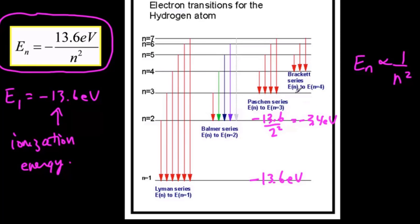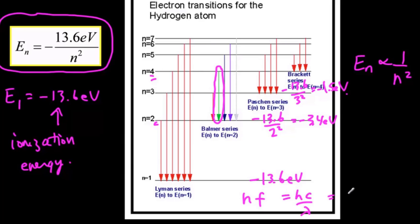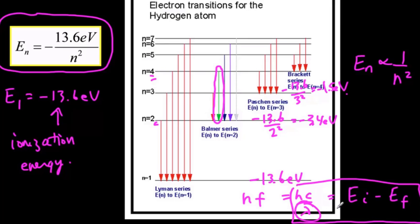So n equals one is negative 13.6 eV. n equals two will be negative 13.6 divided by two squared, which comes out to negative 3.4 eV. The third energy level would be negative 13.6 divided by three squared, which comes out to about negative 1.5 eV. We can now use this formula to predict exactly what the wavelength is when a transition is made from n equals four to n equals two, or any other transition, using the idea that photon energy equals hf, or hc over lambda, equal to the difference between the two energy levels.